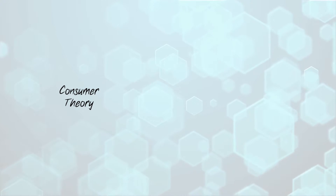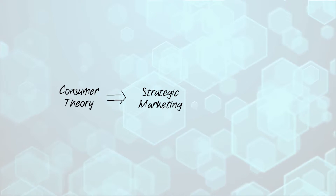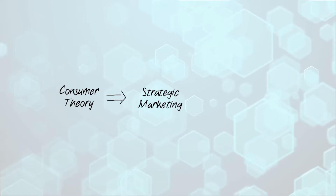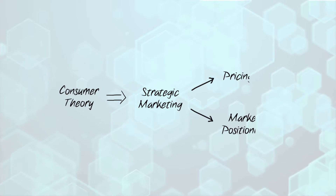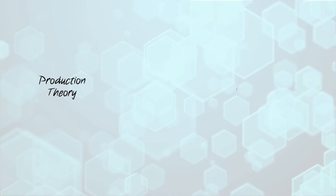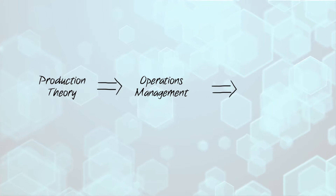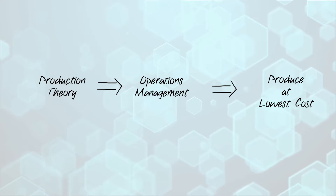For example, when we work our way through consumer theory and microeconomics, you will quickly see that the tools of supply and demand and concepts like price elasticities can certainly help marketing executives figure out how to profitably price and position a firm's products. At the same time, the insights and models of production theory provide a mighty boost to any firm's operations management team seeking to produce the firm's products at the lowest possible cost.